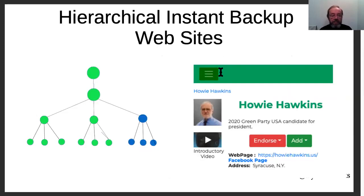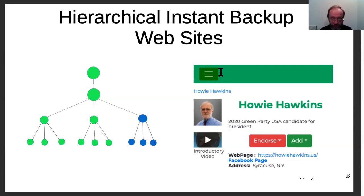Let's talk about the instant backup websites. It's a tree — it's really easy to hide all but a small branch of the tree and create a separate website just for that person. Here we have the branch for Howie Hawkins. During the US presidential election the website went down — it was actually down for two days. But in just a few minutes it was possible to create a backup website for Howie Hawkins.